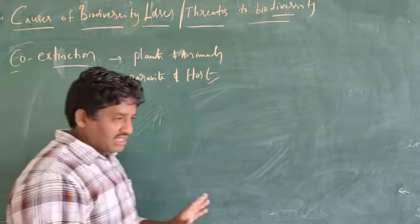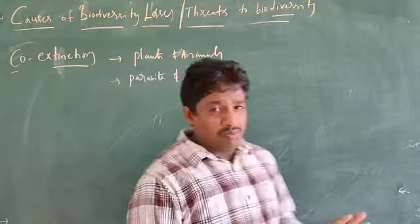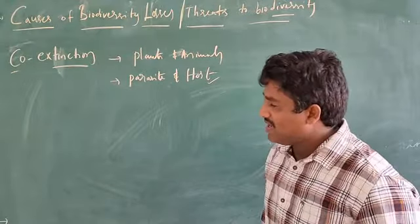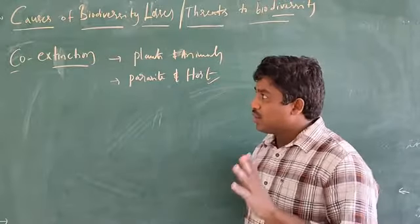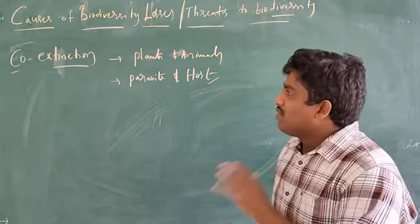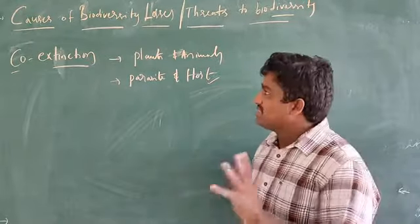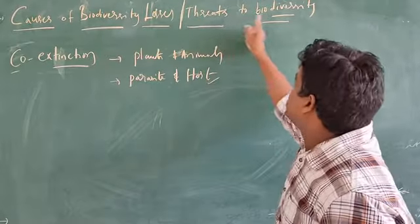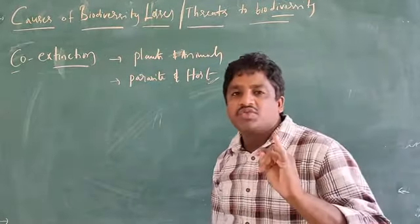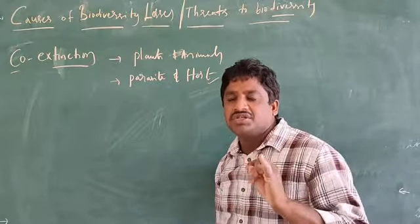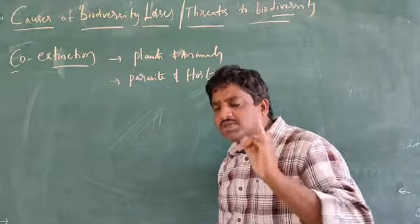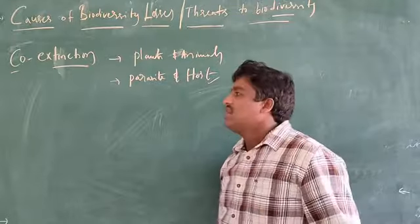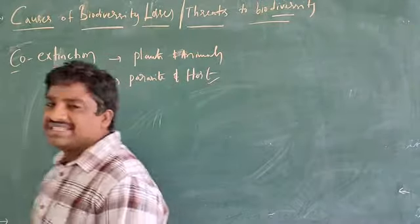These are the four causes of biodiversity losses — very important. For five marks, three marks, two marks, or one mark, these are very important: causes of biodiversity losses, also called threats to biodiversity. First: habitat loss and fragmentation. Second: over-exploitation. Third: alien species invasion. Fourth: co-extinction.